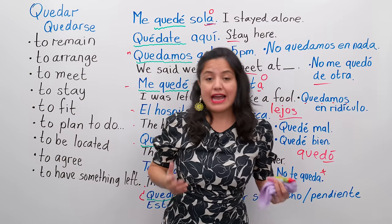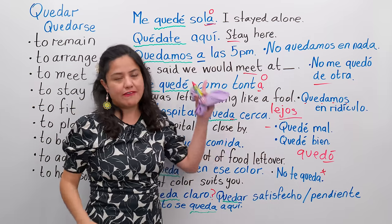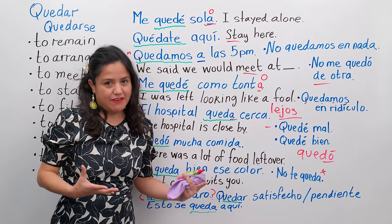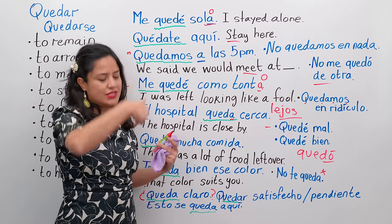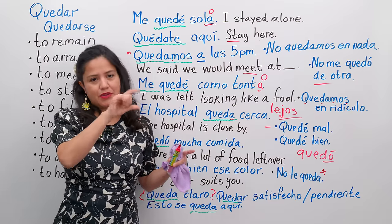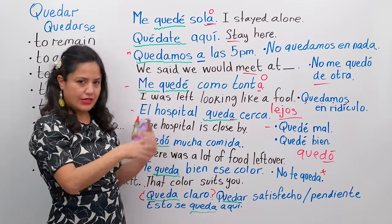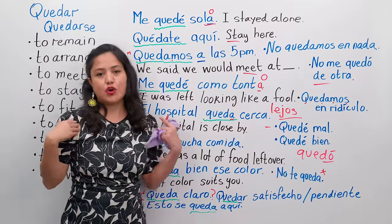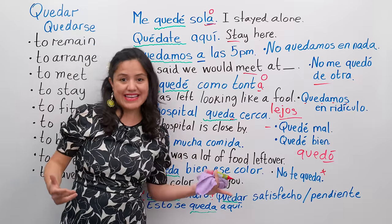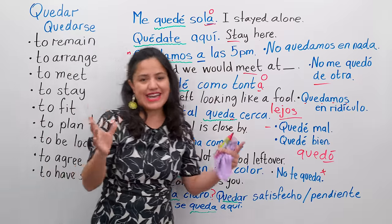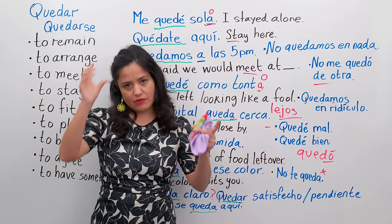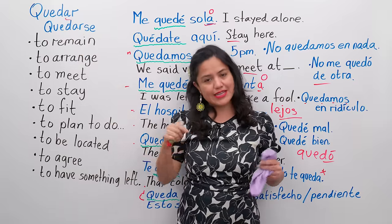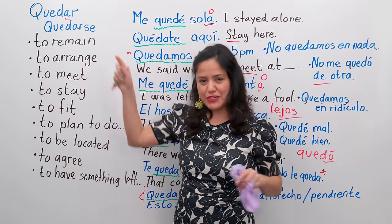Well, that's the lesson for today. As you can see, I'm using here all the verb quedar — it's a very important verb. Now, if you want to learn to conjugate it, I'm going to put the conjugation in the description — present and past — so you can see what conjugations I used. For example: yo quedo, tú quedas, él queda, ustedes quedan, nosotros quedamos, ellos quedan. The verb just takes different endings.